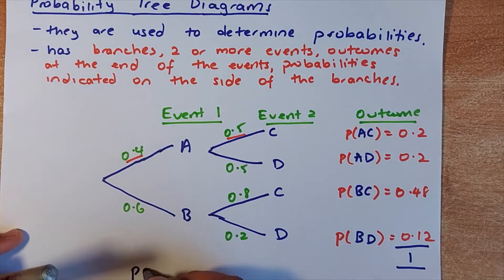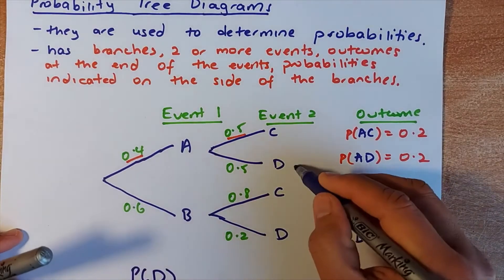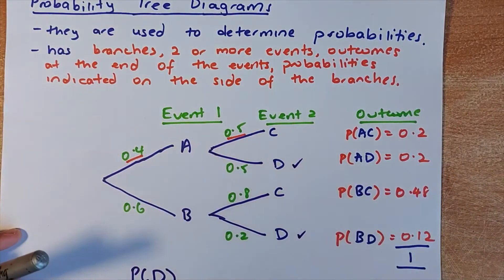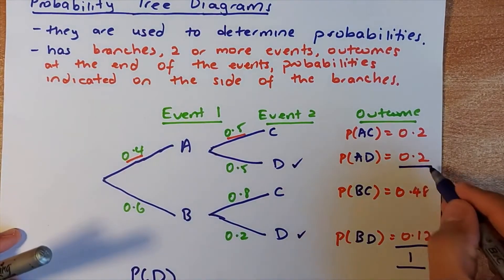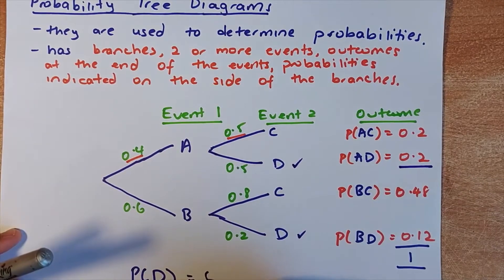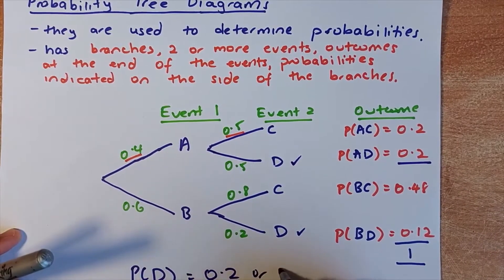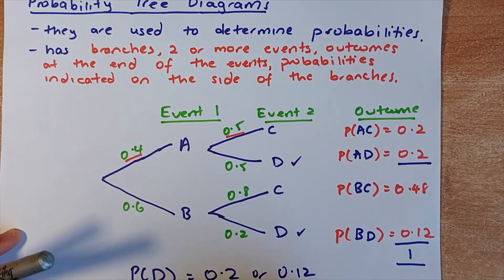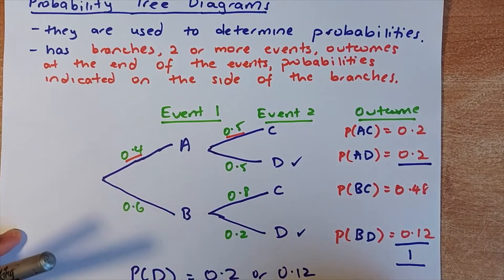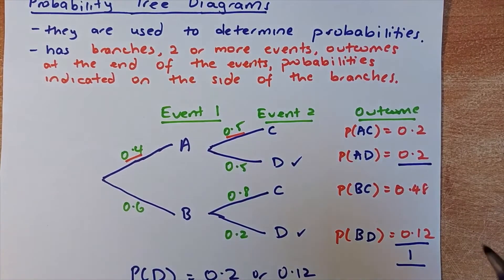Sometimes they would ask you to calculate the probability of D. So the probability of D happens here, AD or BD. So what you do is you get these two numbers, 0.2 or 0.12. You add the two numbers. So it's 0.2 plus 0.12, and the probability of D is 0.32 because it could either be AD or it could be BD.